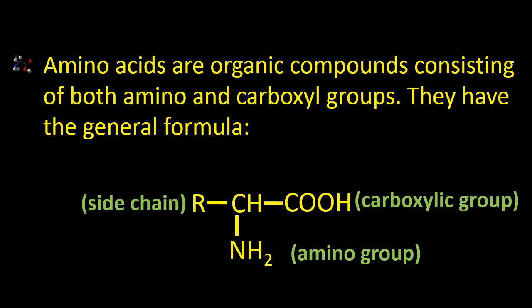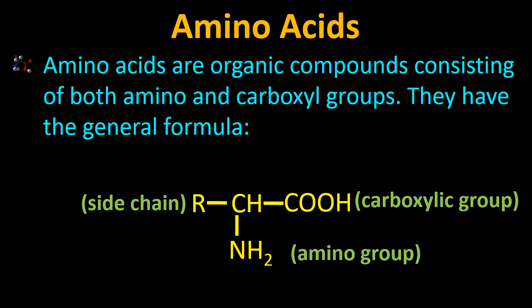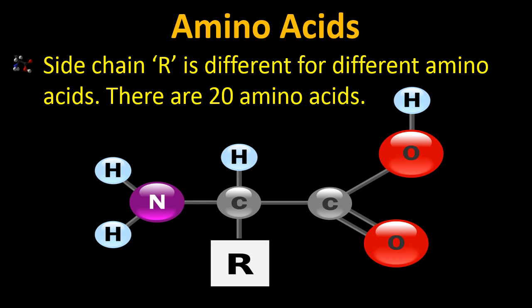Proteins are made up of amino acids, so let's study amino acids. Amino acids are organic compounds consisting of both amino and carboxylic groups — a single molecule having two functional groups. The general formula is R–CH(NH2)–COOH, where the amino group and carboxylic group are both present. This R group is different for different amino acids. There are 20 amino acids in total — such as leucine, valine, glycine, and many others.